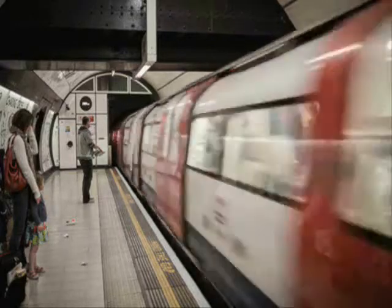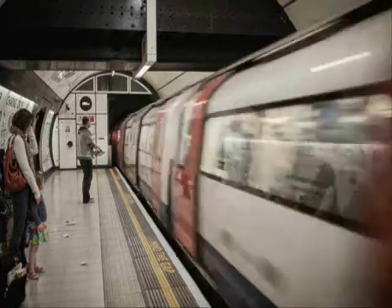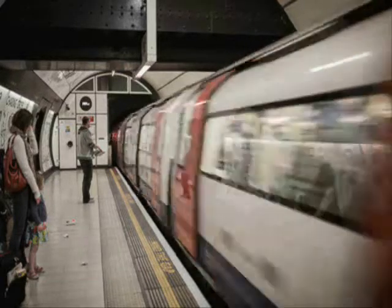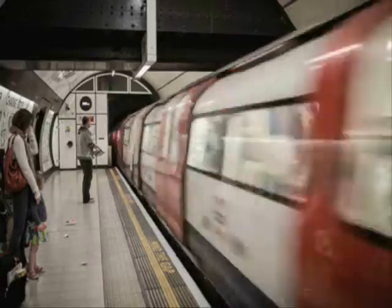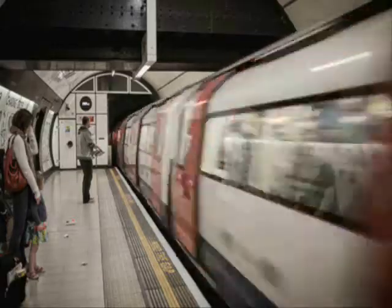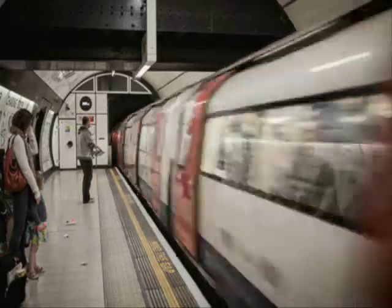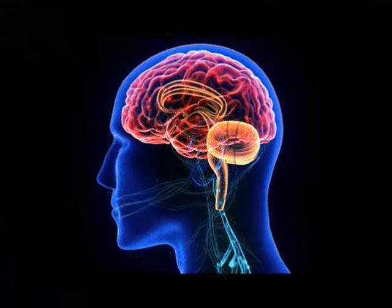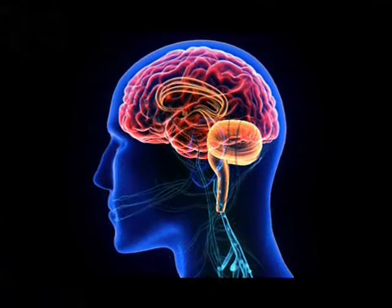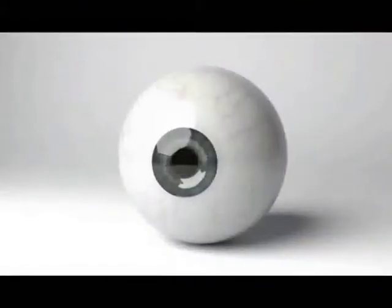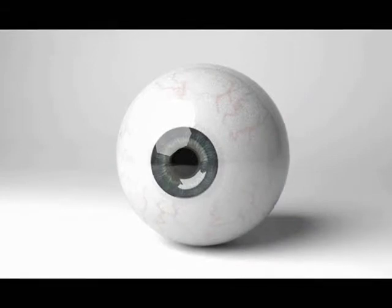Now again close your eyes and think the train is moving forward, then open your eyes — the train appears to be moving in the forward direction. This optical illusion depends on our thinking, meaning what our brain wants to see is exactly what we see.